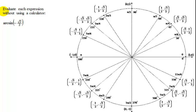In this problem we're asked to evaluate this expression, the arcsine of negative square root of 2 over 2, without using a calculator.